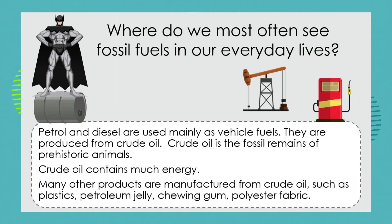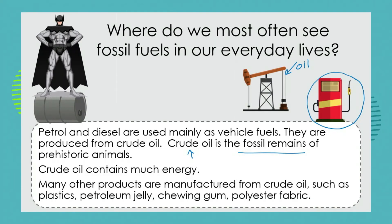Where do we see fossil fuels in our everyday lives? Let's talk first about oil. You would mostly associate oil with fuel for motor vehicles. Crude oil means the oil that comes out of the ground — the fossil remains of prehistoric animals and plants. We take that crude oil and through processes of distillation that you've learned about previously when separating mixtures, we can make substances like petrol and diesel, and those fuels are used mainly to power vehicles and big machines.